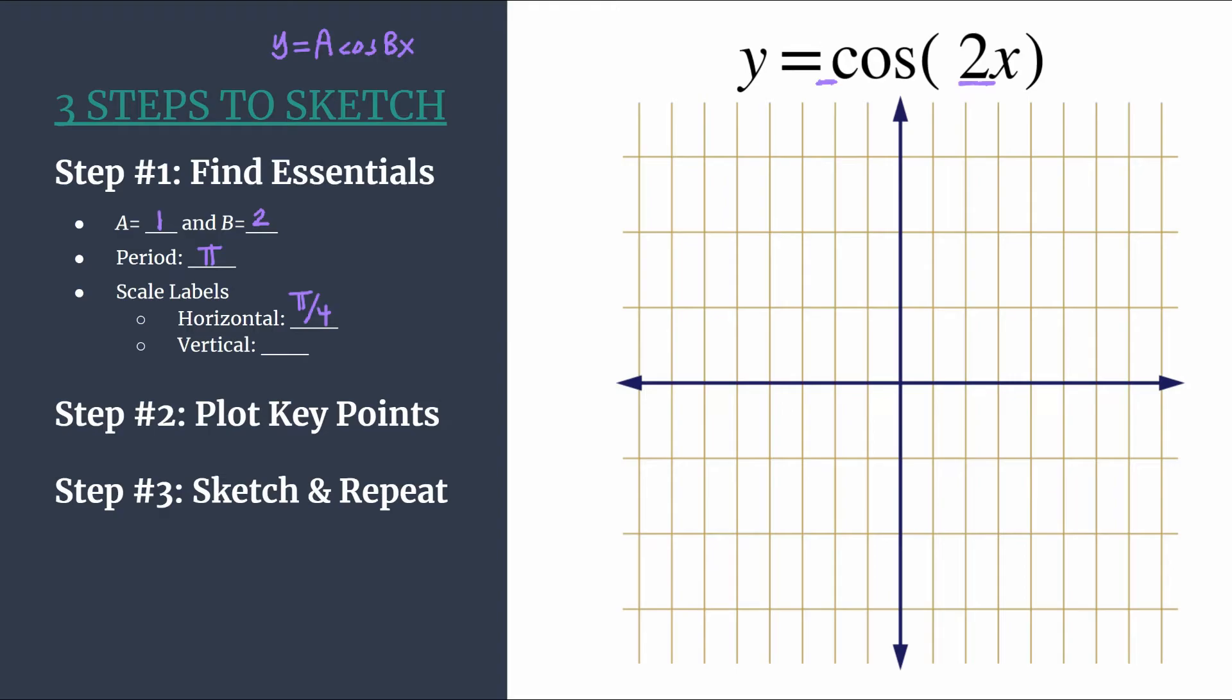And the vertical scale you usually don't have to do as much work. Using a, the value of a, can typically be really good. It's 1 so that really is a great move in this case. So let's go ahead and label and then we'll move on to step 2.